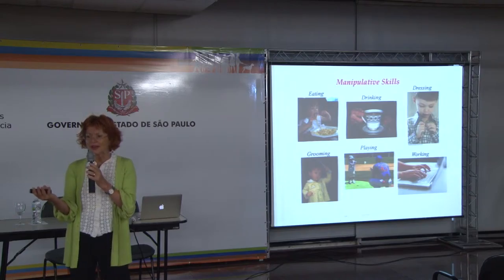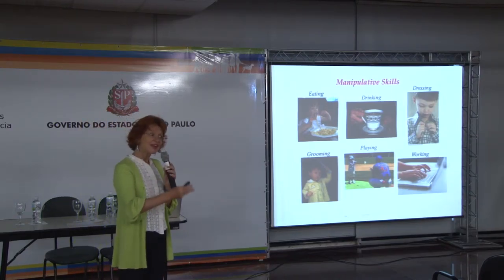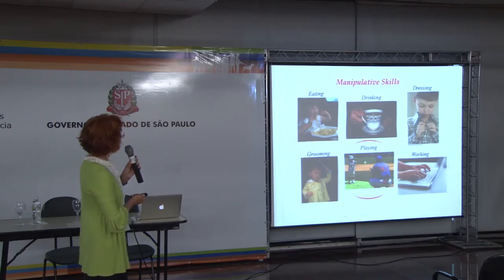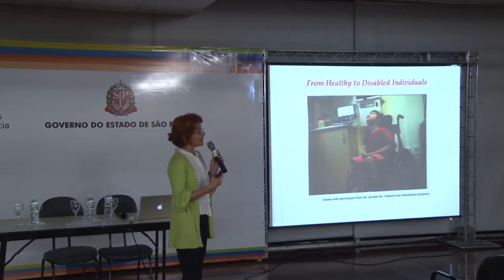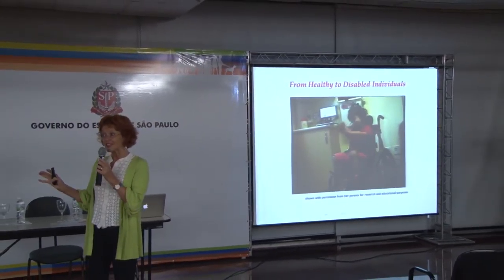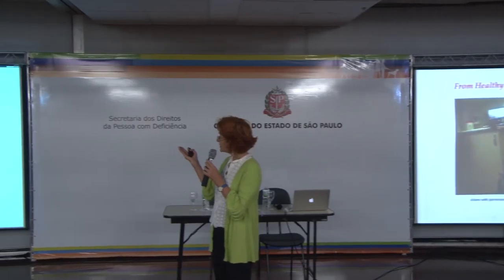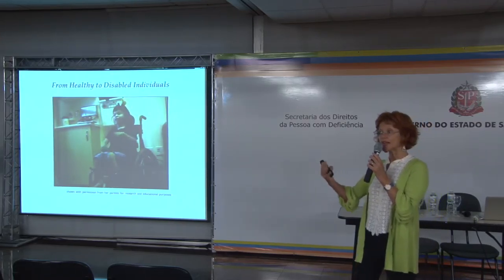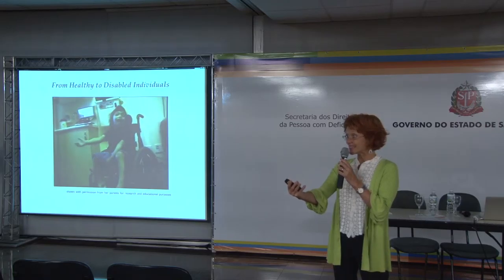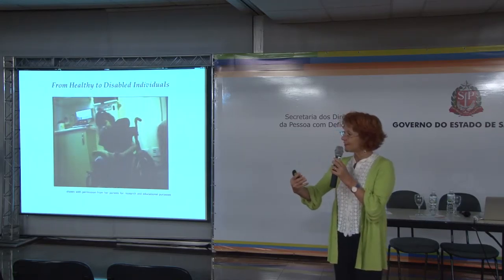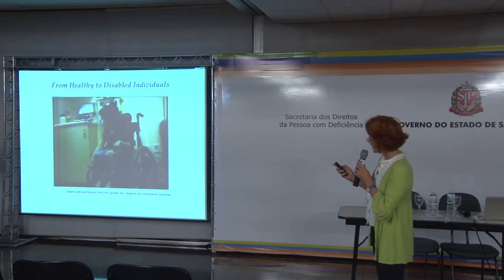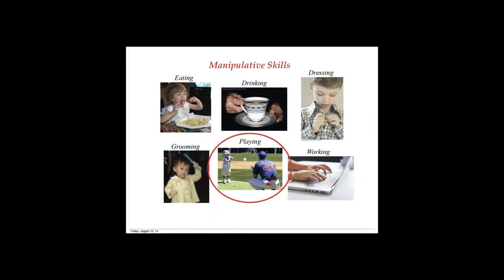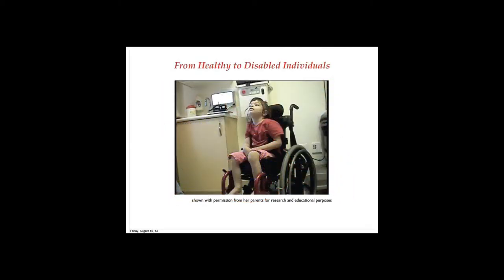Let me show another example. You may say this is very sophisticated, but our patients are much more complex. Let me show an example where we looked at a throwing task applied to a very difficult population: children with secondary dystonia due to cerebral palsy. How can we use our quantitative approach to develop an assessment and then an intervention to modify their behavior?